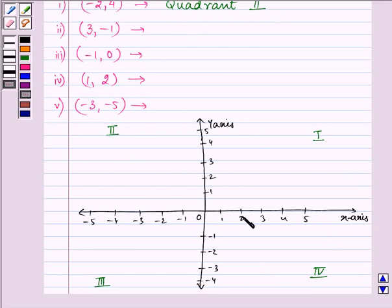(-2, 4) - that means -2 from here and 4 from here. So this is the point (-2, 4), and doesn't it lie in the second quadrant? So I was right, isn't it? So proceeding on to the next one.